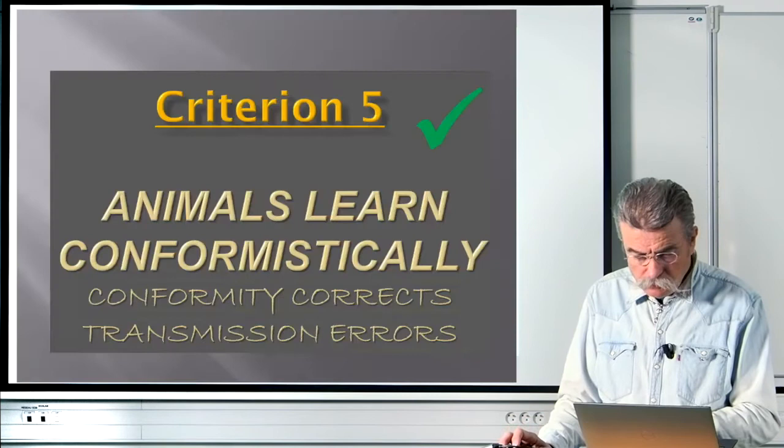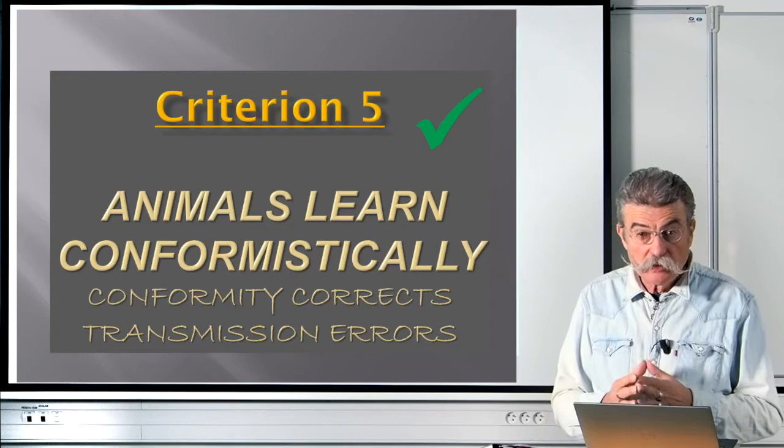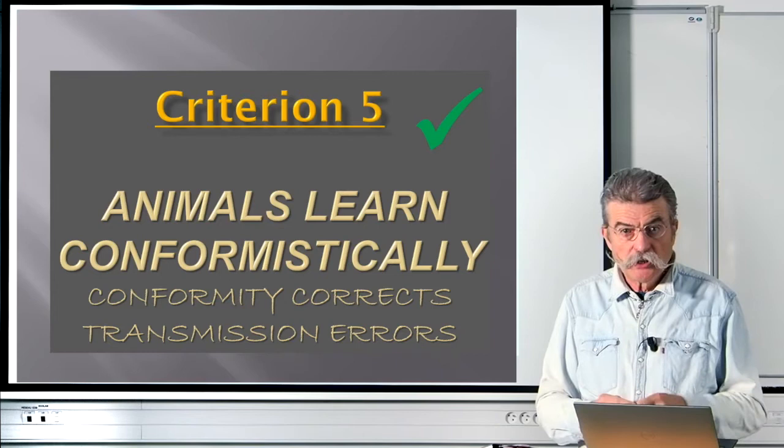The result is a step function — a first plateau, a gap, a second plateau. This is criterion 5, and again criterion 5 is fulfilled. As shown previously, when conformity is input into a model of a transmission chain, immediately you see the emergence of traditions.